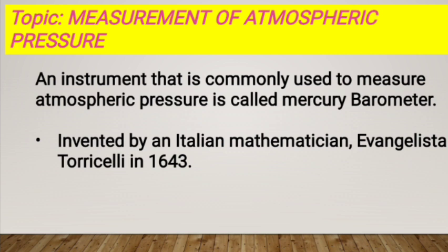Mercury barometer: an instrument that is commonly used to measure the atmospheric pressure is called a mercury barometer, invented by Italian mathematician Evangelista Torricelli in 1643 in Italy.